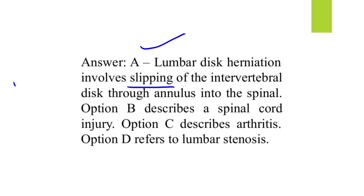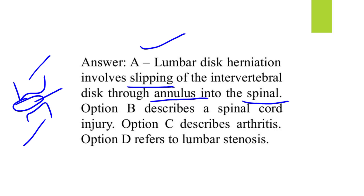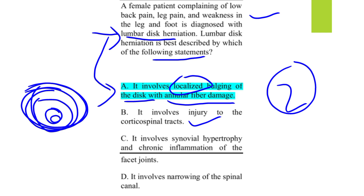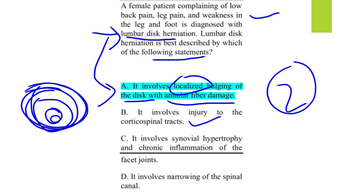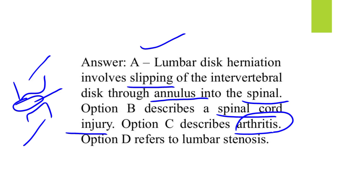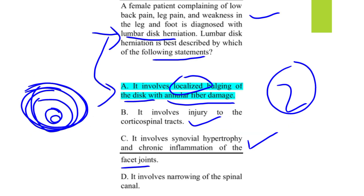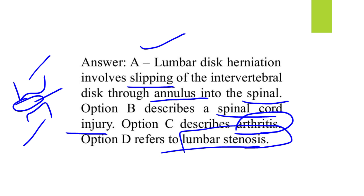Lumbar disc herniation involves slipping of the intervertebral disc — present between two vertebrae — through the annulus into the spine. Option B describes injury to the corticospinal tract, which refers to spinal cord injury. Option C describes arthritis with synovial hypertrophy and inflammation of the facet joint. Option D describes narrowing of the spinal canal, which is lumbar stenosis.